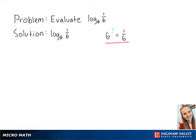Using our exponent rules, we know that 6 to the negative 1 equals 1 over 6. Therefore, the log base 6 of 1 over 6 equals negative 1. This is the final answer.